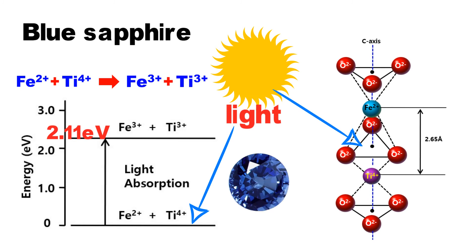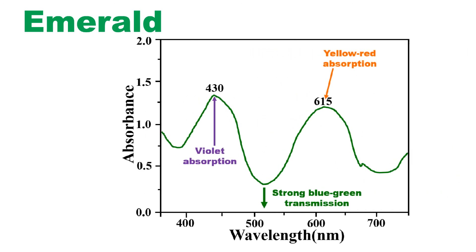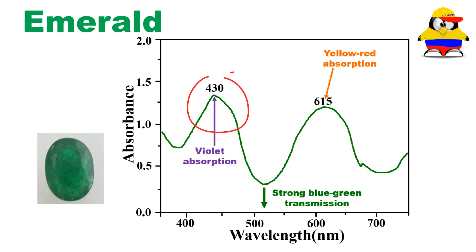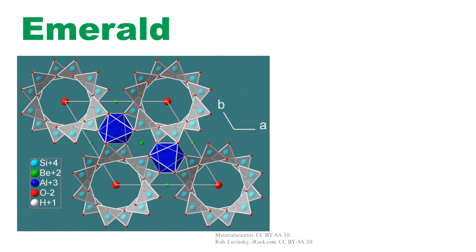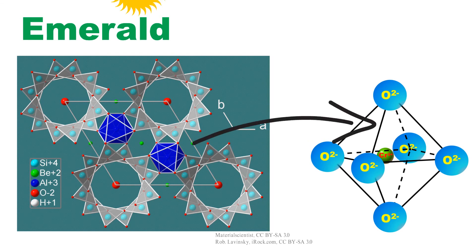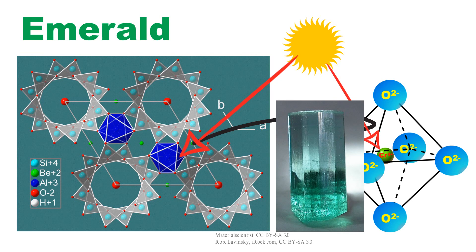In case of emerald, you can see two strong absorption bands near 430 and 615 nanometers. These are violet and yellow-red absorptions. These two absorptions are responsible for strong blue-green transmission. This UV visible spectrum is caused by chromium trivalent cation. If light illuminates the emerald, chromium ion absorbs the light and will be excited. So, this energy results in green.